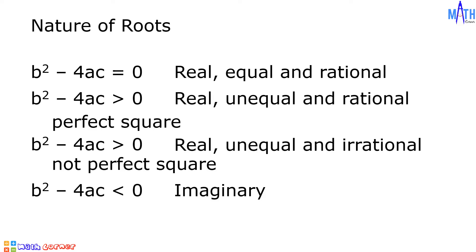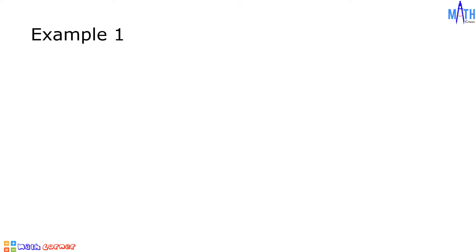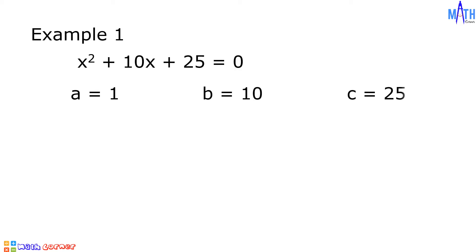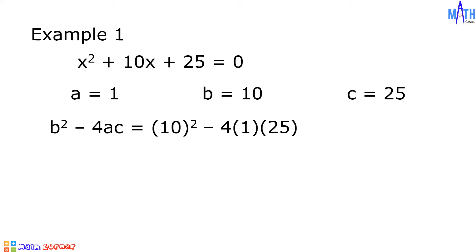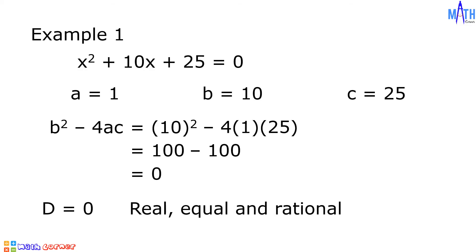Let us have some examples. Example number 1: let us determine the nature of the roots of x squared plus 10x plus 25 is equal to zero. In this quadratic equation, the value of a is equal to 1, b is equal to 10, and c is equal to 25. The discriminant is b squared minus 4ac. Substituting the values and simplifying, the discriminant is equal to 0. Since the discriminant is equal to 0, the roots are real, equal, and rational.